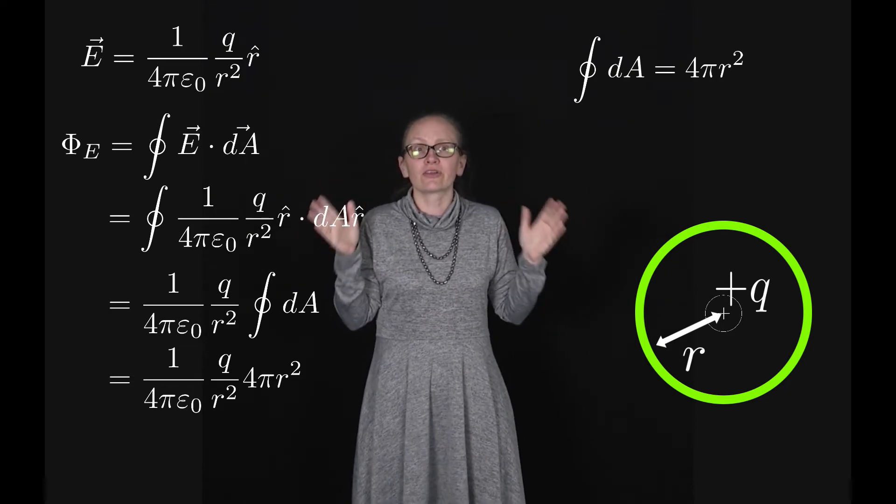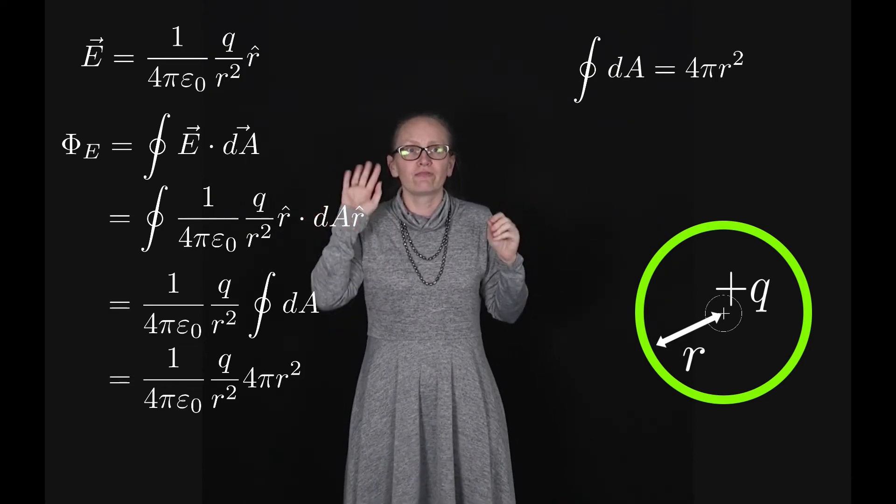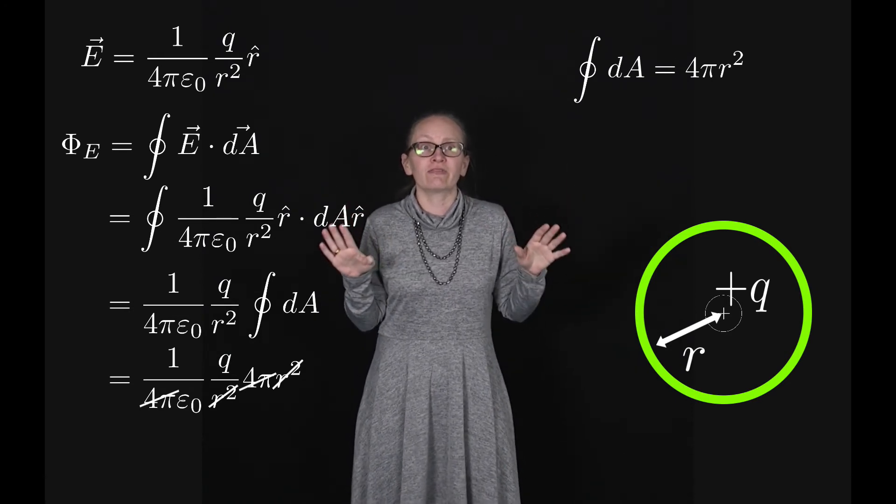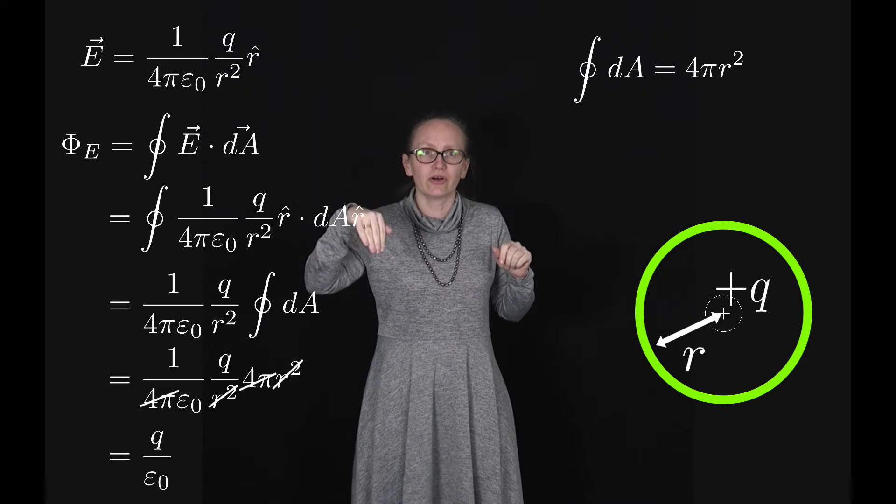You can see there's a lot of things which are going to cancel here. The 4π's will cancel and the r squareds will cancel, and so that electric flux ends up being equal to Q over epsilon naught.